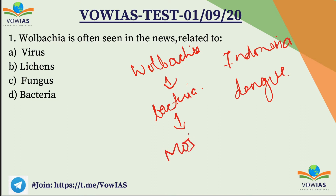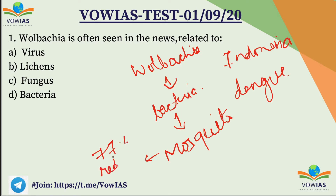Aedes aegypti, which is a mosquito breed. They introduced it and dengue got reduced by 77% — a 77% reduction in dengue cases. Now this Wolbachia bacterium does not occur naturally in the Aedes aegypti.